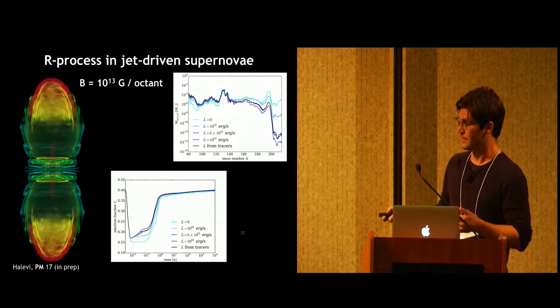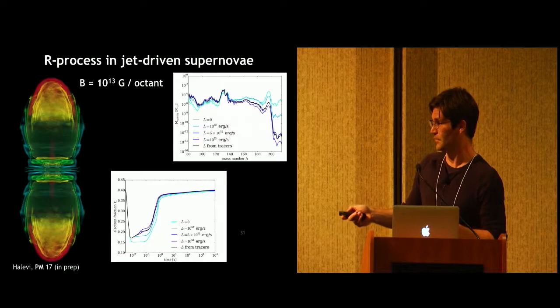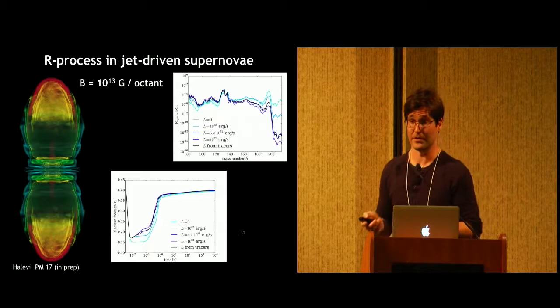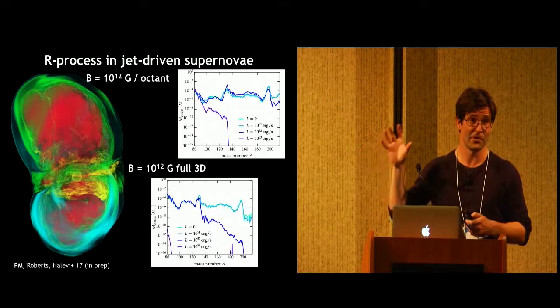This is really due to the Y_E, so the electron fraction evolution which you see in this plot down here, where for the different neutrino luminosities you see how you reach either very, very neutron-rich conditions or slightly less so, which really play a crucial role in how these particles evolve here.